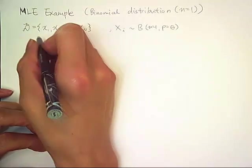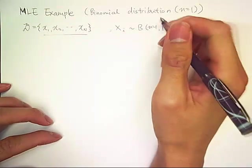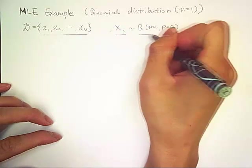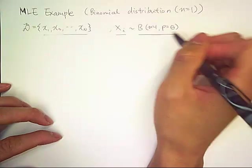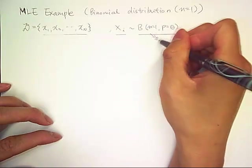So let's assume we have n samples. Each sample follows the binomial distribution with n equals 1. Here, n is a number of trials.